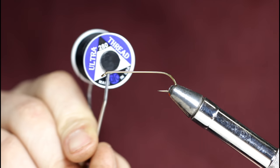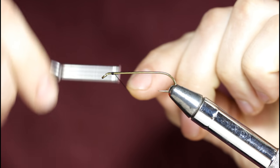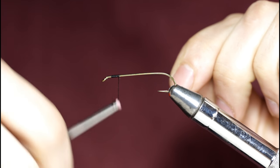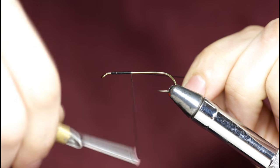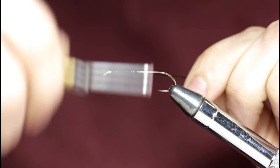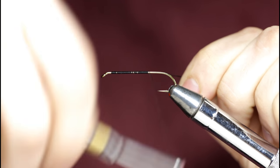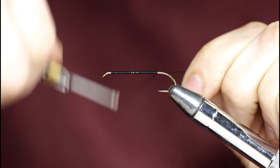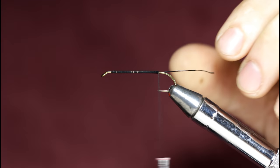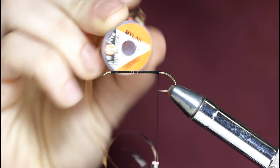The hook I've got in the vise is a size 6, 3 extra heavy, 7 extra long, limerick style streamer hook. I'm going to start some black thread at the head and work my way down towards the point of the hook. This is 280 UTC thread, a pretty thick thread that will help me build this fly up real quick.